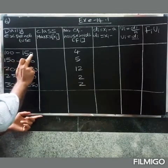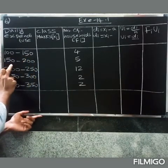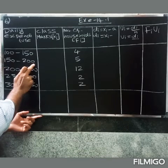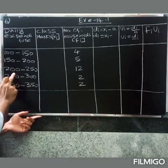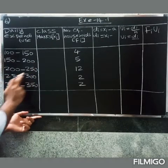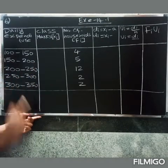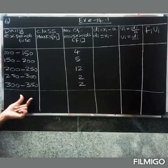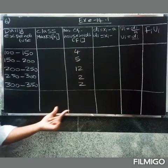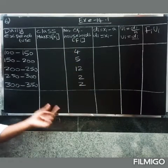Here 150 and 150 match, 200 and 200 match, 250 and 250 match — so the data is continuous. We will use the step deviation method.